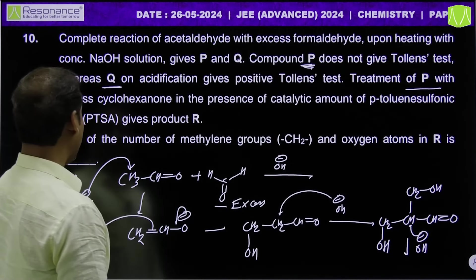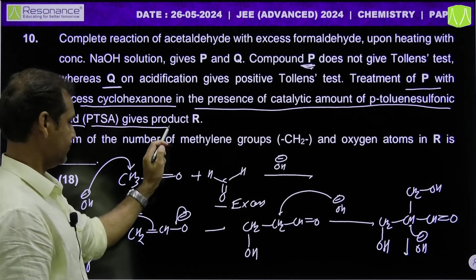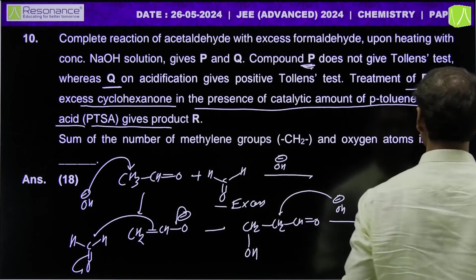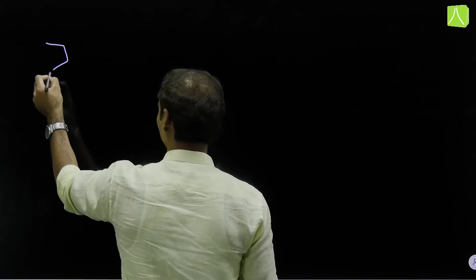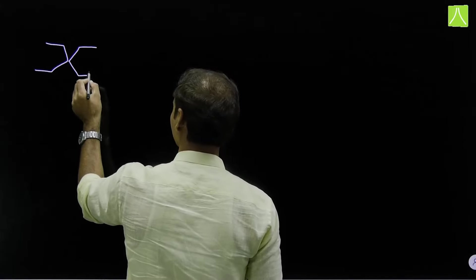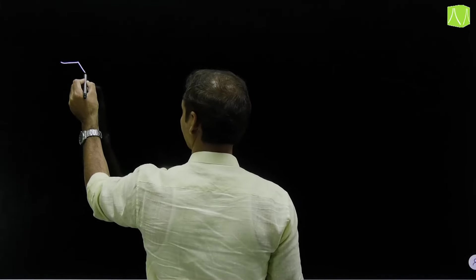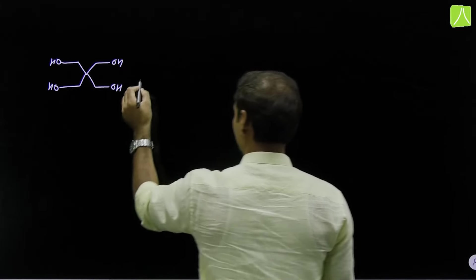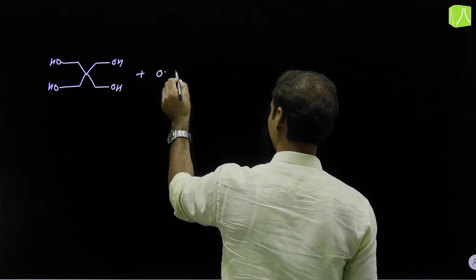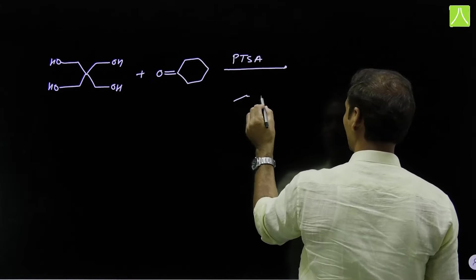Treatment of P (pentaerythritol) with excess cyclohexanone in presence of a catalytic amount of para-toluene sulfonic acid (PTSA). PTSA is para-toluene sulphonic acid, a strong sulfonic acid, used only as a source of H+.